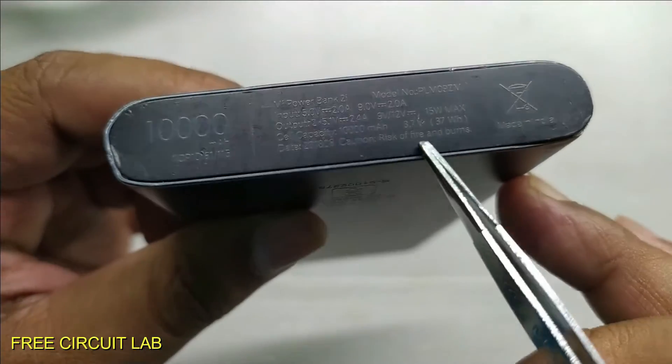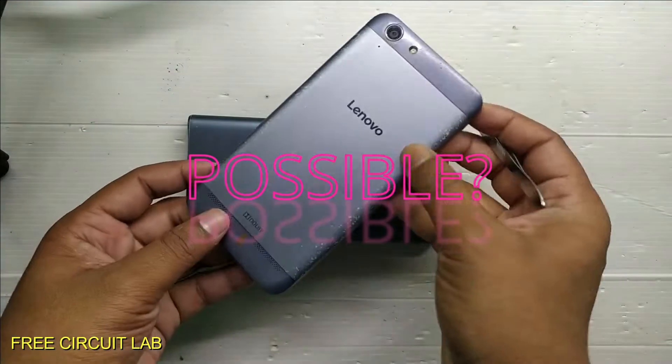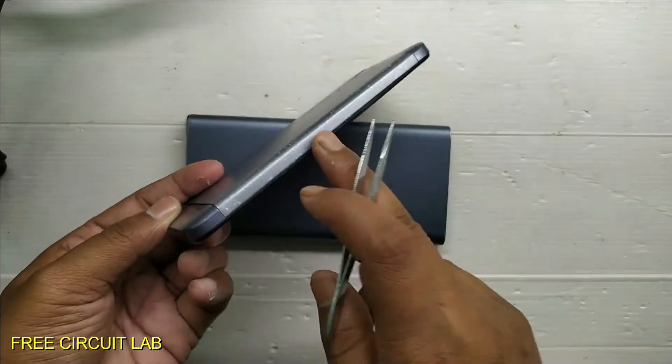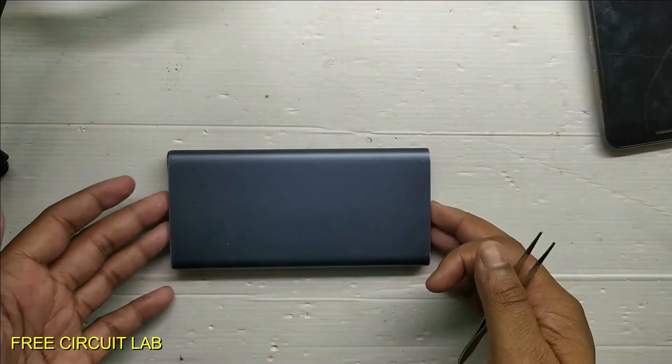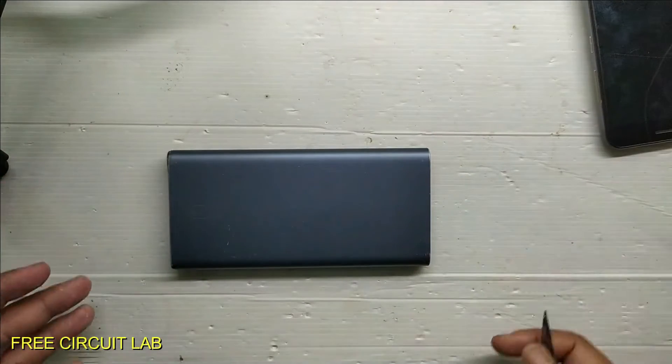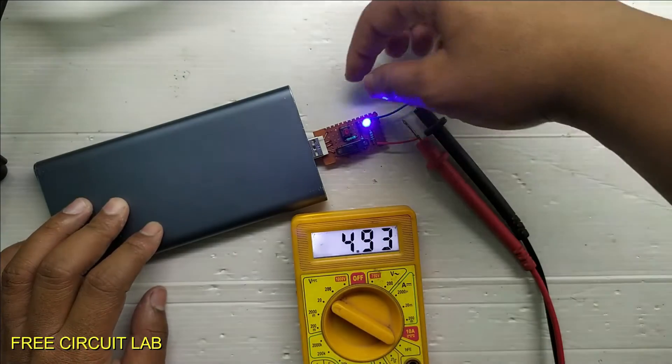Sometimes we see 5V, 9V and 12V written on a charger or power bank. But is it really possible to take out these voltages for some other purposes? Also, we will focus on why we need higher voltages in the first place. This video will help you understand quick charging better and will also help you make your own trigger for QC voltages.